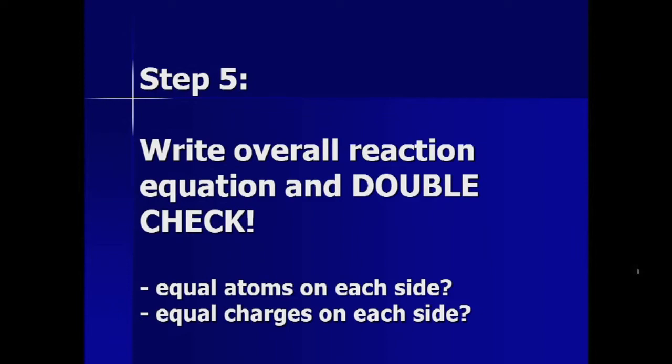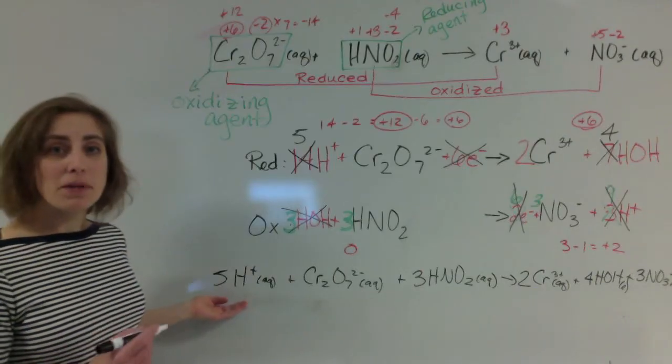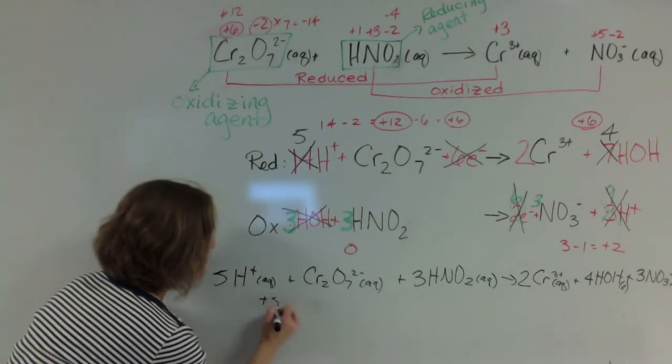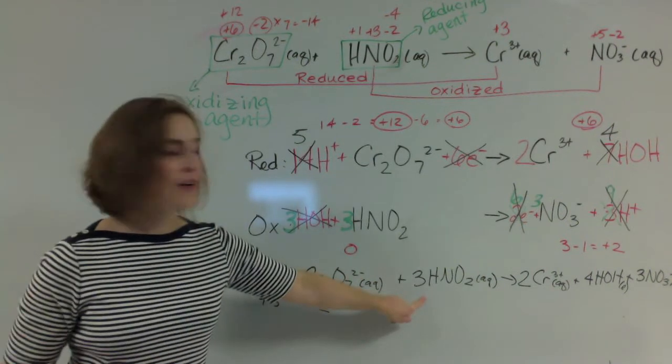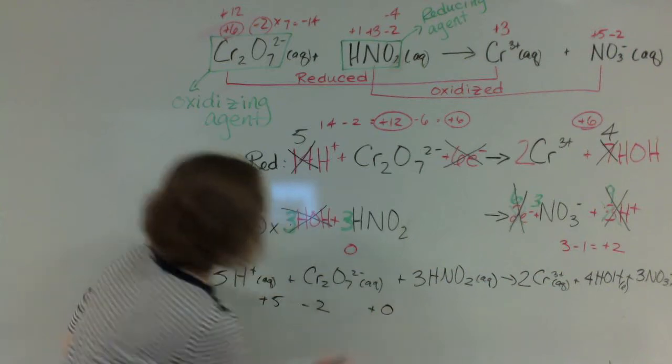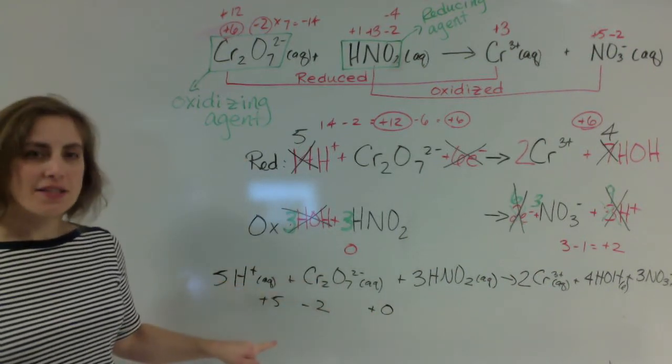Now let's look at our charge. Here I have five plus ones, so that's positive five. Here I have a negative two from that dichromate, minus two. Over here, nothing, plus zero. Overall, that's going to be a positive three.